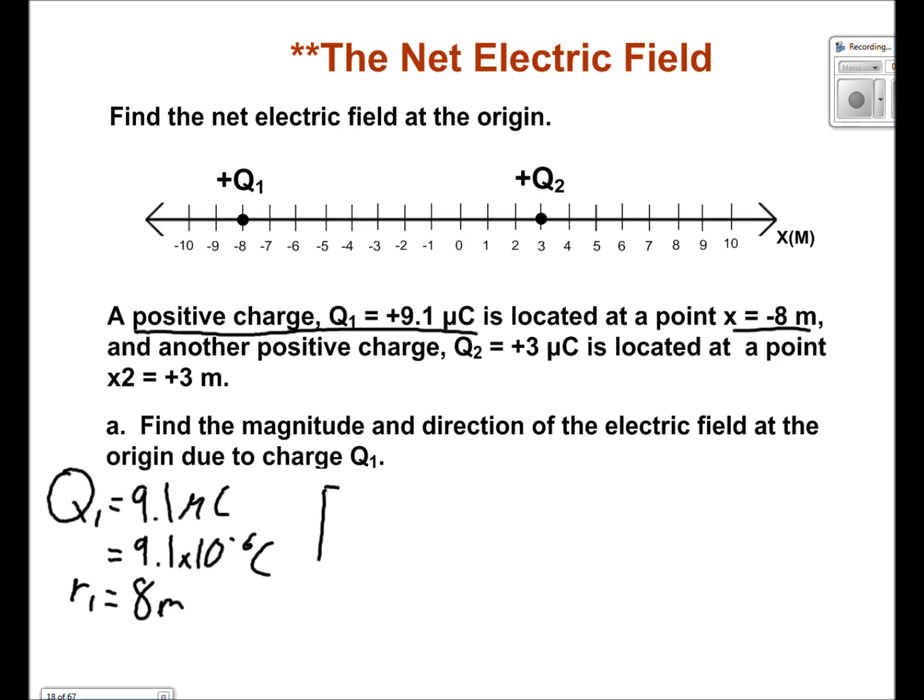What we now do is we use our equation E1 equals KQ1 over R1 squared. We plug in our values, 9 times 10 to the 9th for K, 9.1 times 10 to the negative 6 for Q1, and 8 for R1. Solve this out and we find 1279.6875 newtons per coulomb.